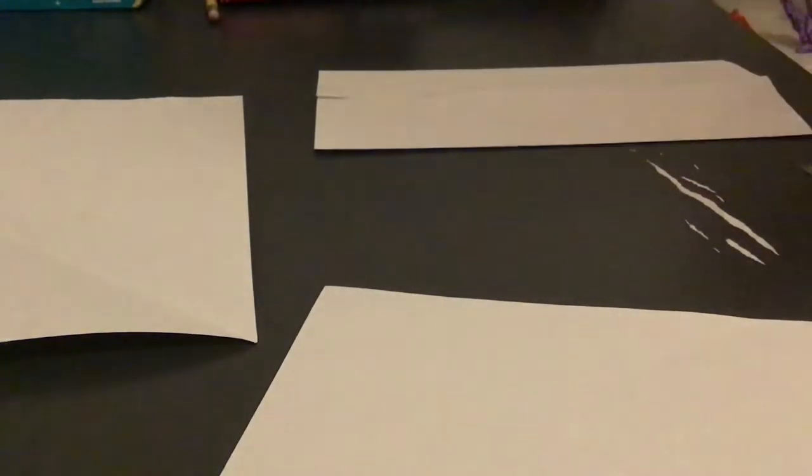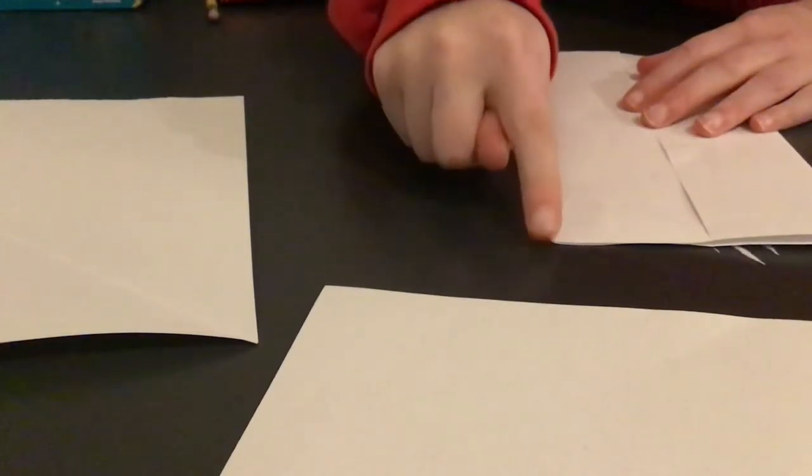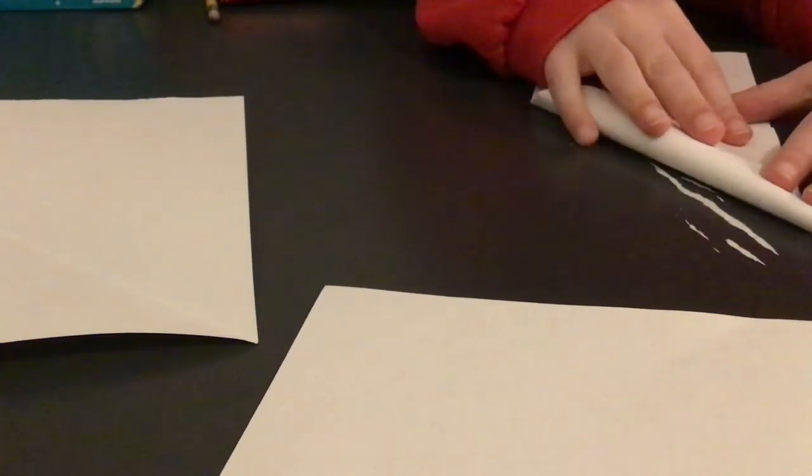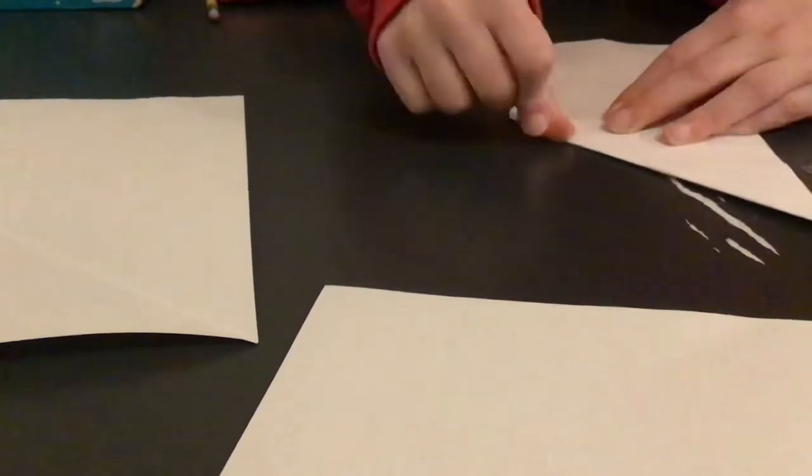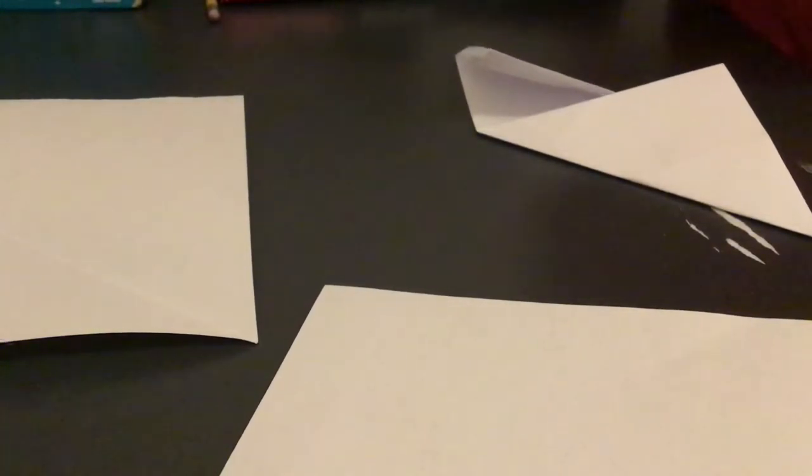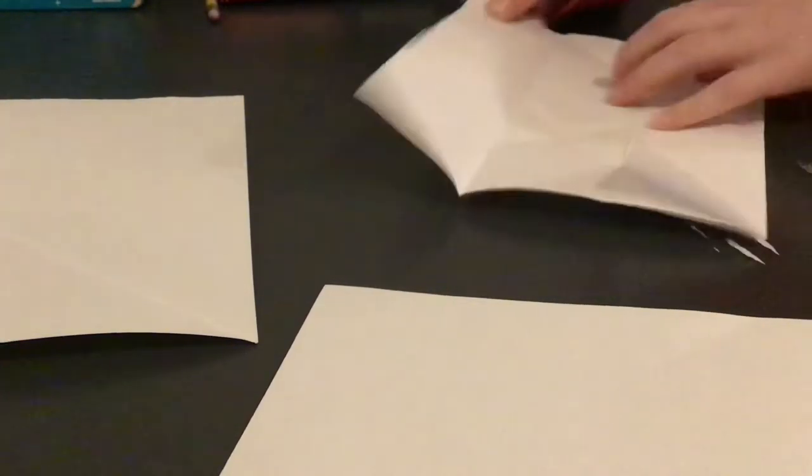And now, you're gonna make it vertical. You're gonna take the bottom edge, and fold it to the right. Then, you're working on the other side. Fold it to your left. Then turn over. Then unfold. Unfold it all.